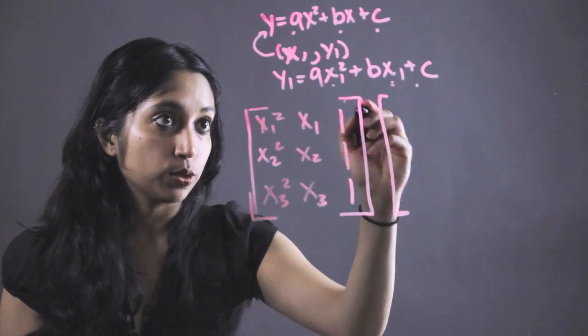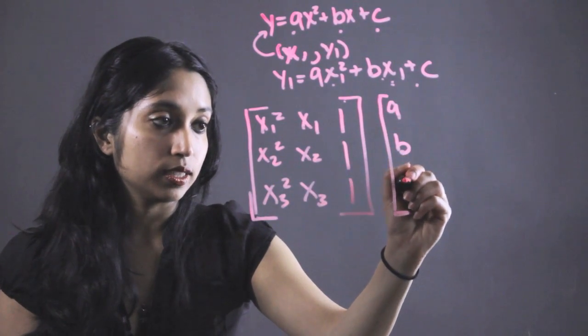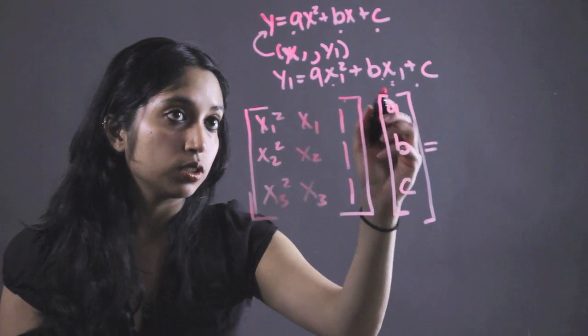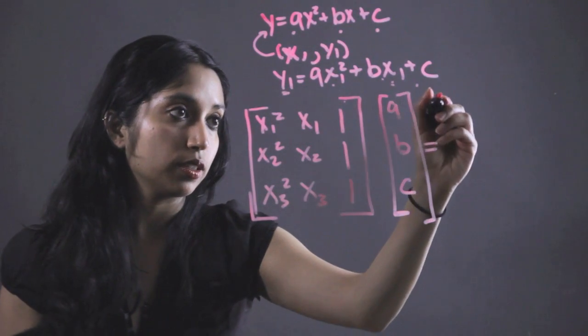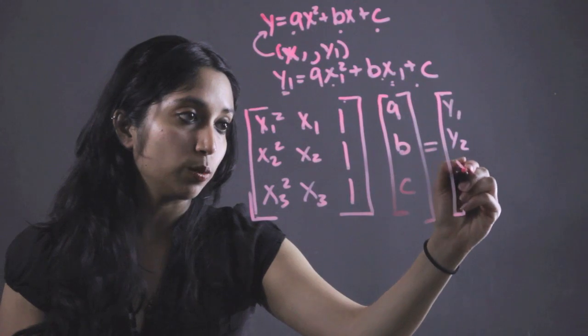And we're just going to write out another matrix with the constants in them. So a, b, and c. And we're going to set that equal to what we have over here, which would just be y1, y2, and y3.